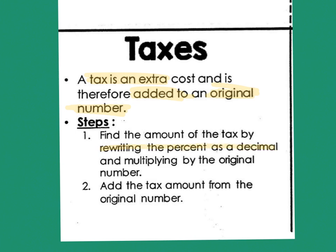And the steps are going to be exactly the same. I'm going to rewrite the percent as a decimal first. Then I'm going to multiply it by the original number. And then last, I would add the tax to the original number. So this one is also an add.